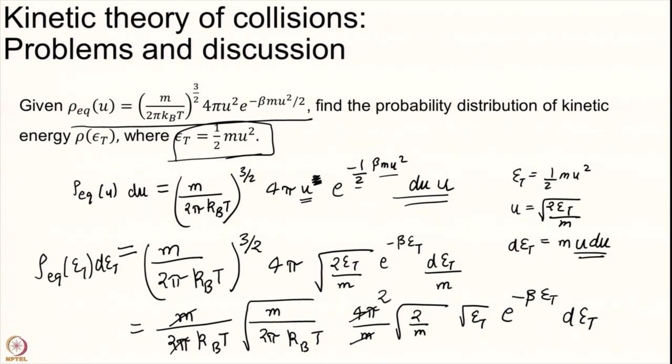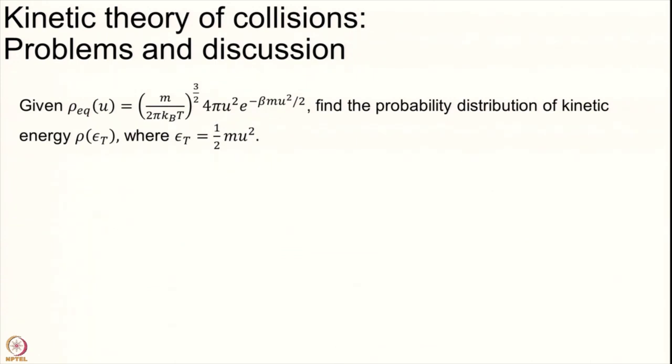Several factors cancel: m cancels with m, 2π cancels to give 2, m cancels with m, 2 cancels with 2. The net result is 2/(kT) times 1/(πkBT)^(1/2) times εt^(1/2) e^(-βεt), which equals ρ(εt). Go back one slide to make sure this equation is correct and all factors are cancelled correctly. This is about transformation of variables, a very important concept.